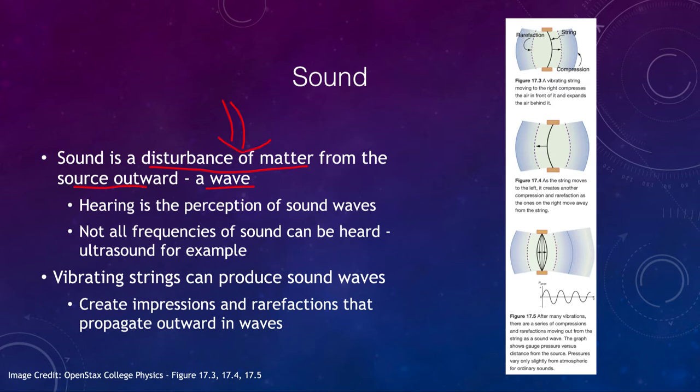Sound waves cannot propagate through a vacuum, so you cannot hear sound coming from space because it has to propagate through a vacuum. Unlike light waves, which we'll look at in a future chapter, sound waves cannot propagate through a vacuum. In terms of hearing, hearing is our perception of sound waves — when those sound waves reach our eardrum causing it to vibrate, our brain converts that into the sounds we hear.